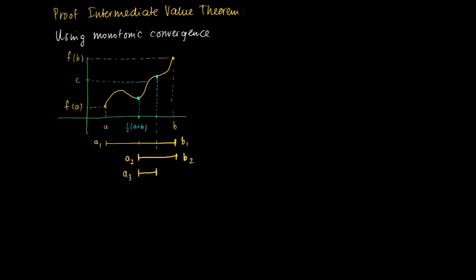Again, we specify the midpoint of A2, B2 and compare the function value there. It turns out to be larger than c and then we shift the right endpoint of the interval. So we maintain the same left point, so A2 equals A3, but B2 changes into B3.